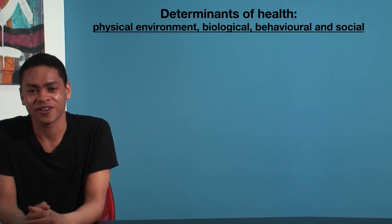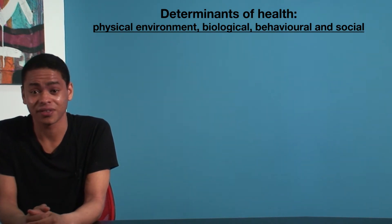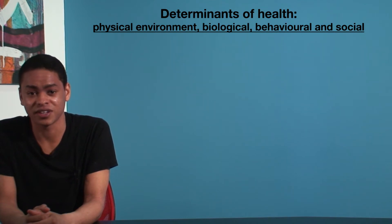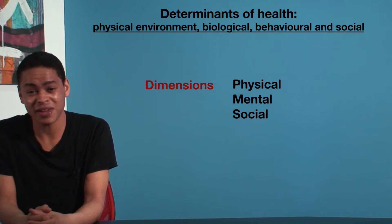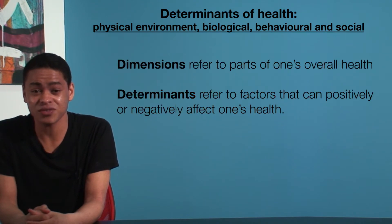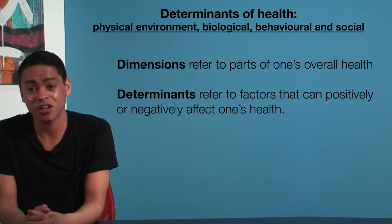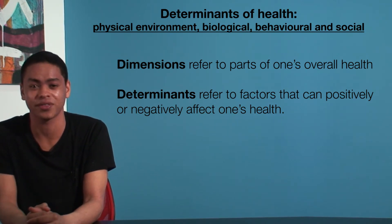Many students confuse the concepts of dimensions of health and determinants of health. As we learned in the previous videos, the three dimensions of health are physical, mental, and social. To make the distinction clear, dimensions refer to parts of one's overall health, whereas determinants refer to factors that can positively or negatively affect one's health.